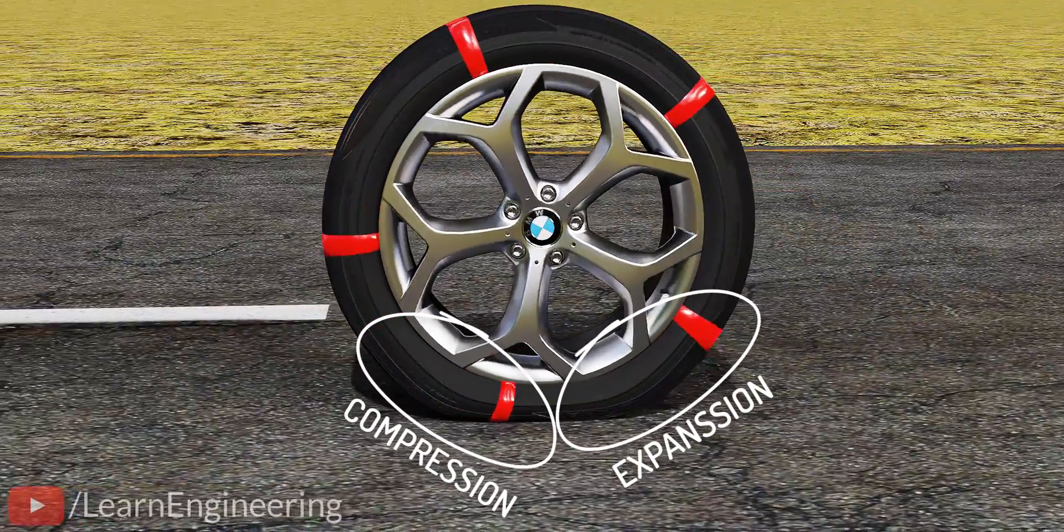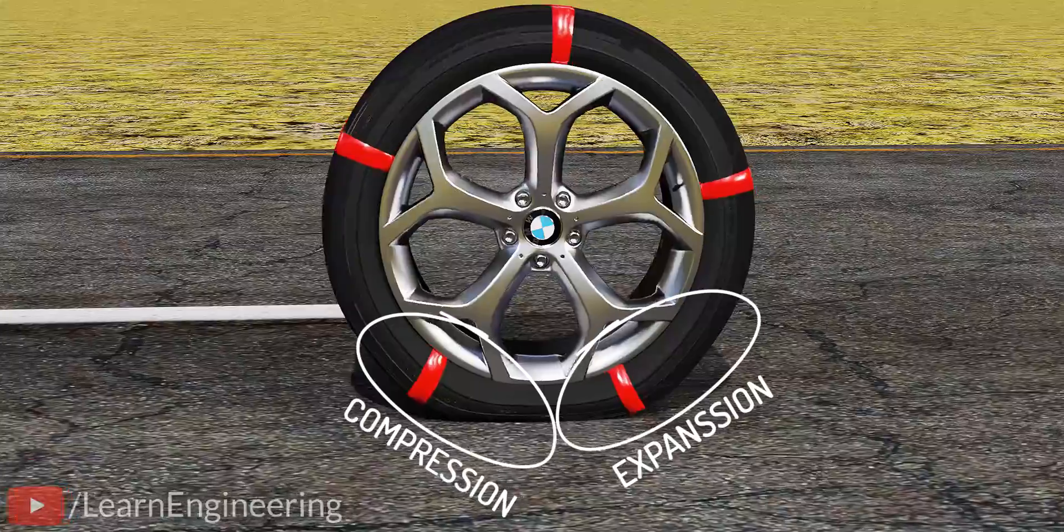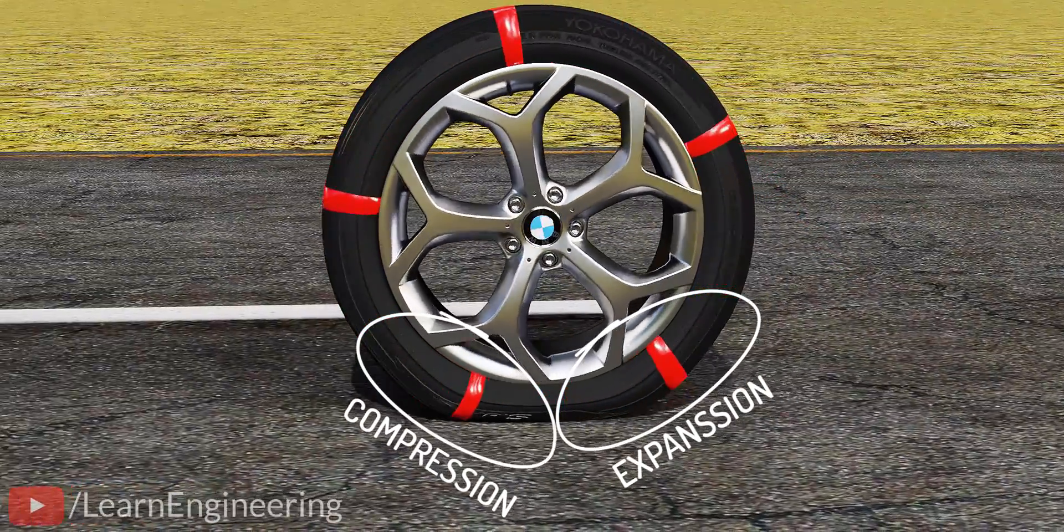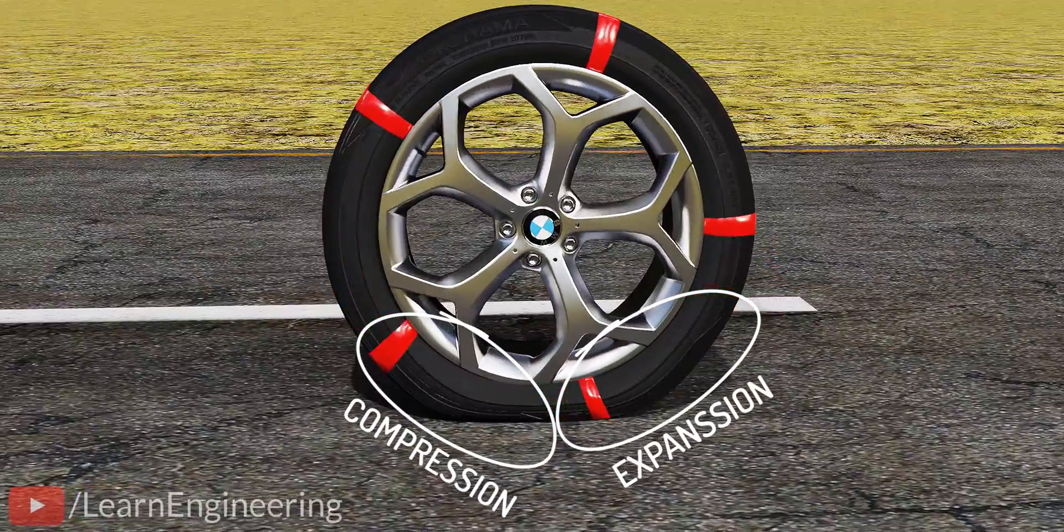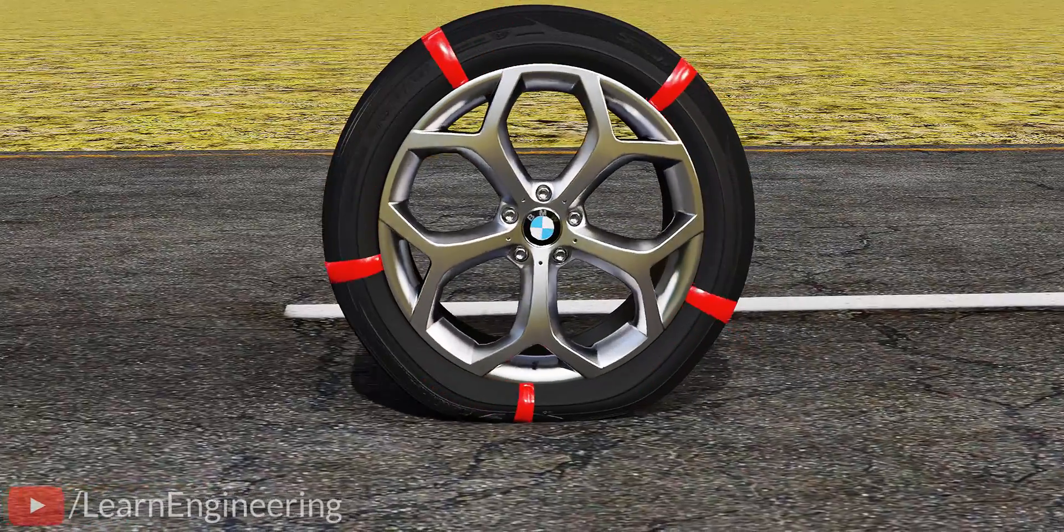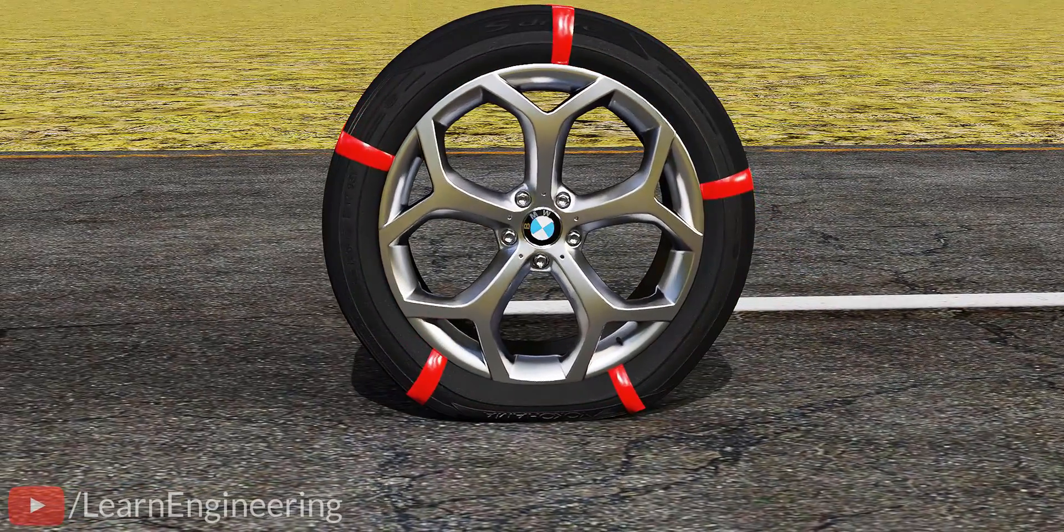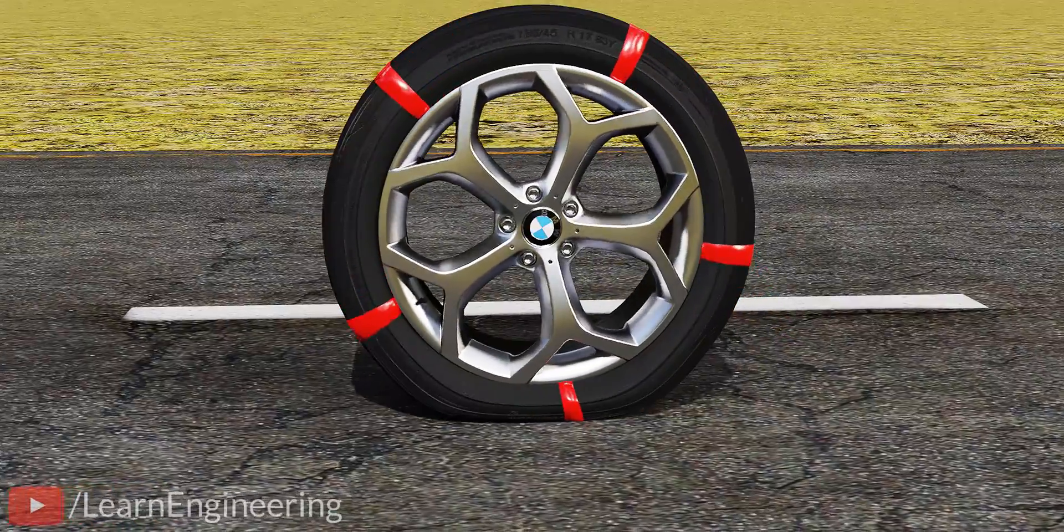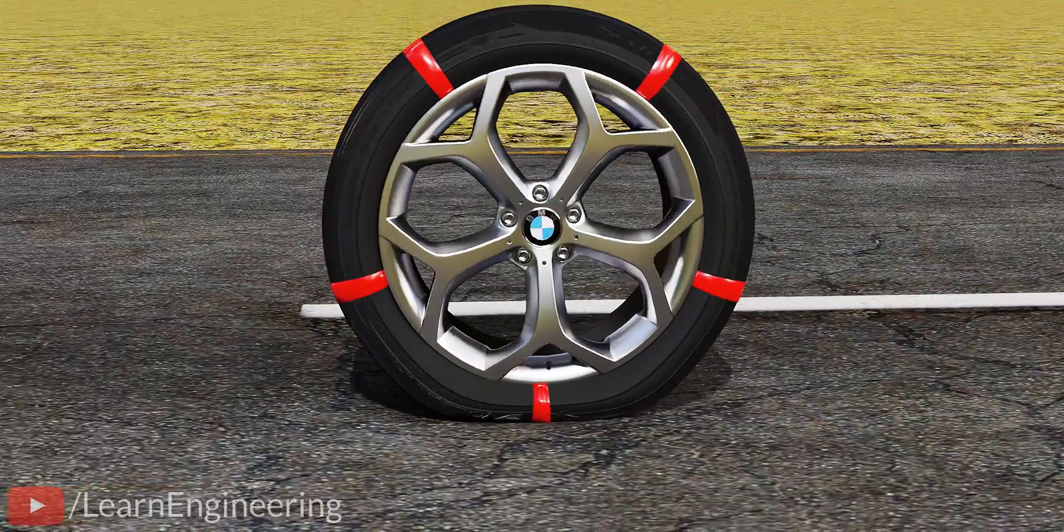As we saw earlier, when the rubber material undergoes compression and expansion, it has to undergo hysteresis cycles, which result in energy loss. The same energy loss happens in a rolling tire. This is the reason a rolling tire slows down. The hysteresis energy loss produces a new resistance called rolling resistance.